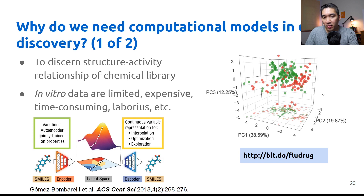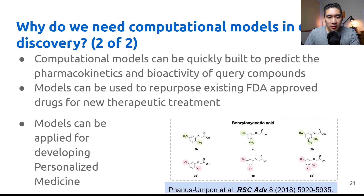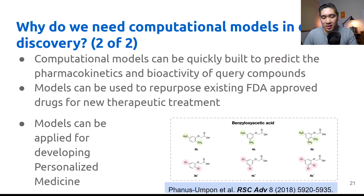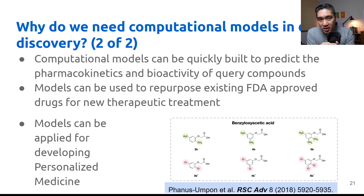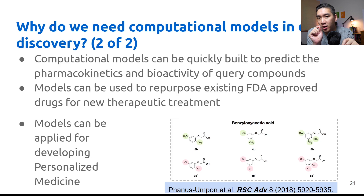Green indicates good activity and red indicates bad activity toward the target protein. Computational models can be quickly built to predict the pharmacokinetics and bioactivity of query compounds. Pharmacokinetics means absorption, distribution, metabolism, excretion, and toxicity of drugs. Bioactivity refers to the inhibition or activation of the target protein. The data collected in part one essentially falls into this bullet point — particularly the bioactivity of query compounds.